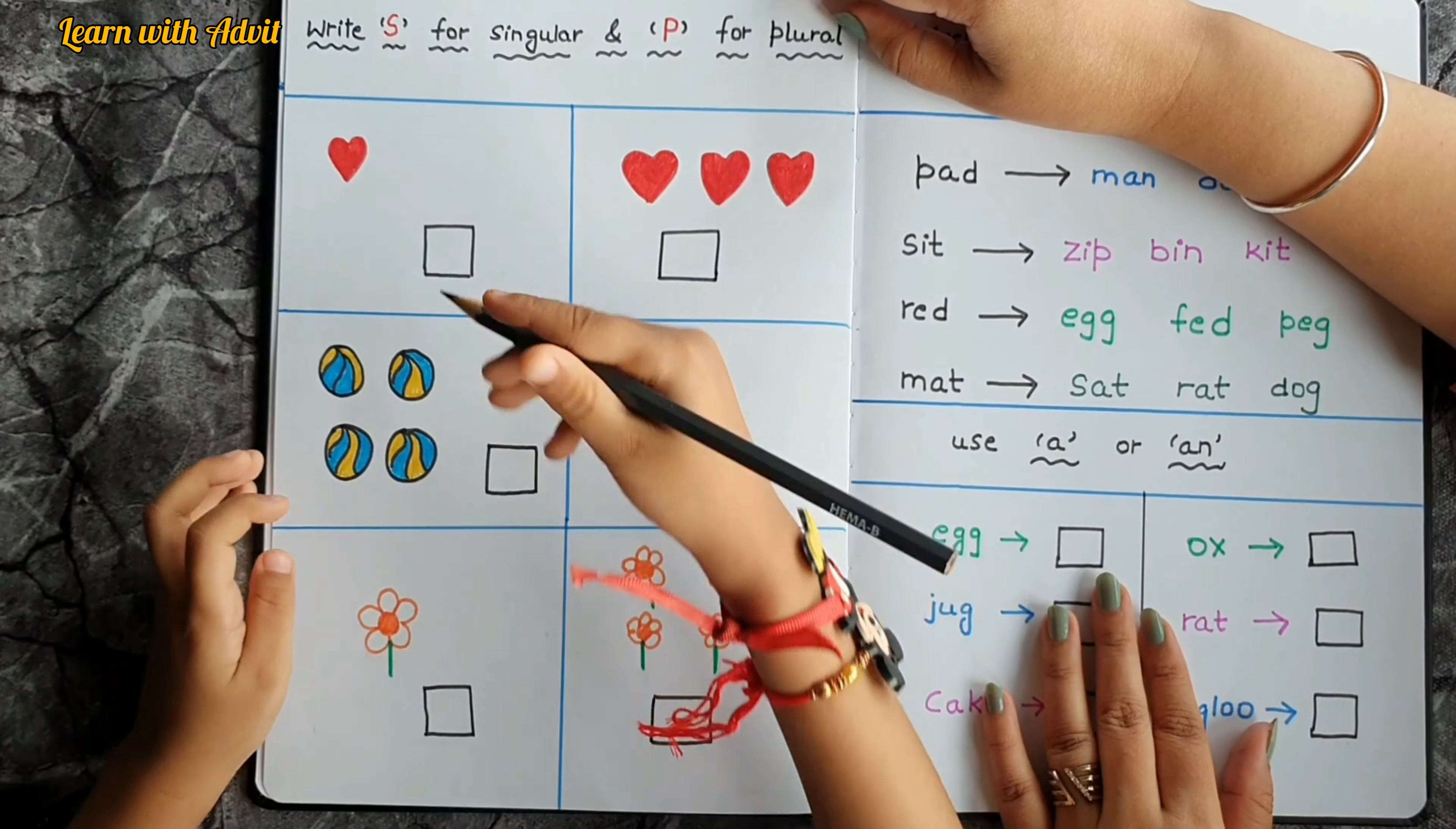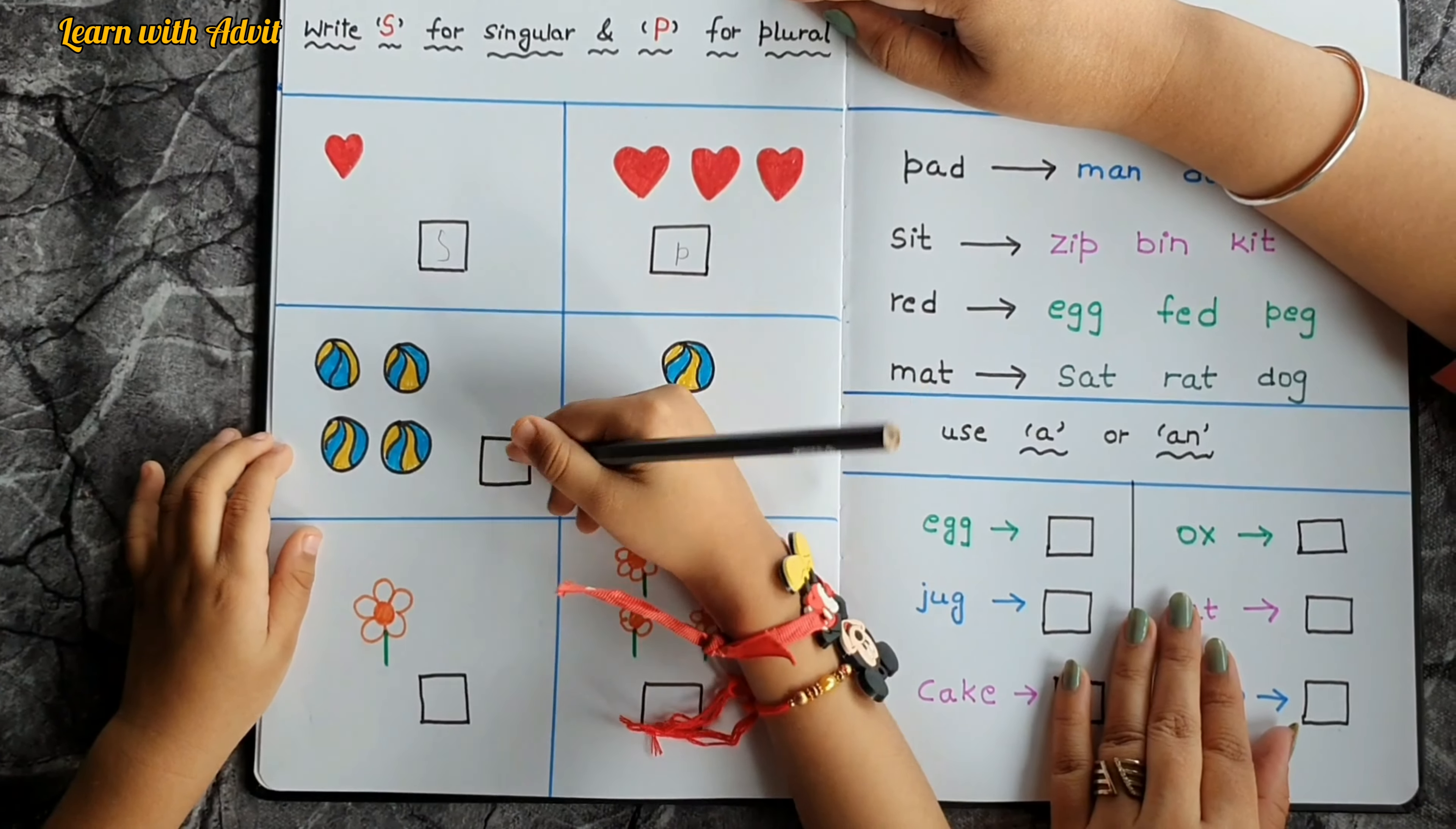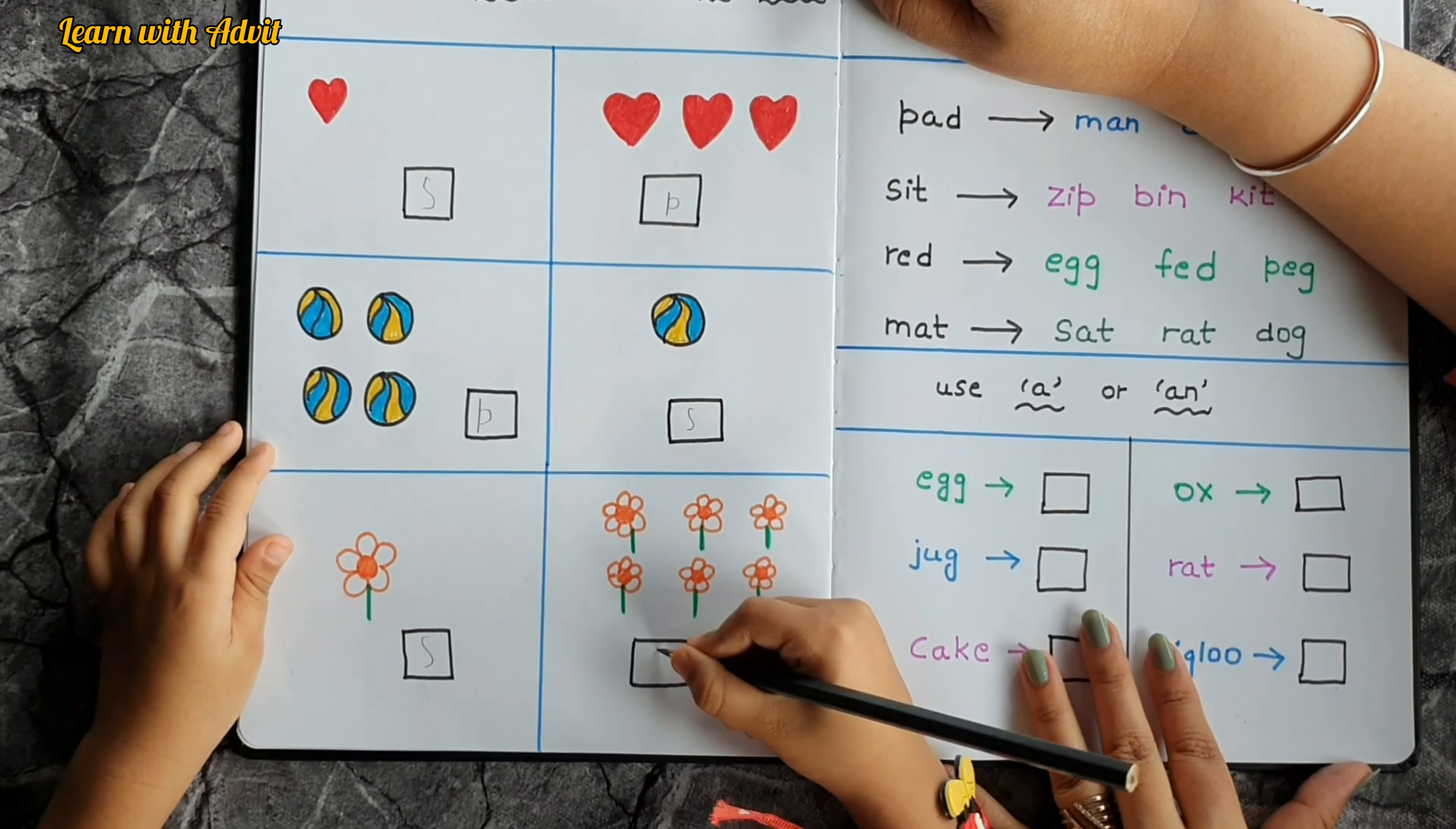And there's three hearts so there's plural, very good. And there's four walls, there's one wall so it's singular, very good. There's one flower so it's singular. More than one, there's six of them, there's plural, very good.